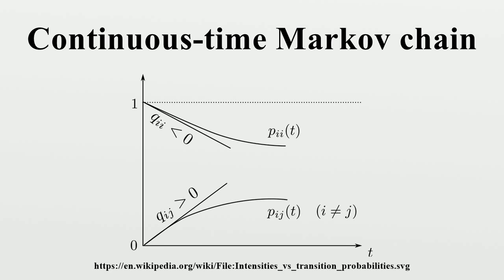Time reversal. For a CTMC X(T), the time-reversed process is defined accordingly. By Kelly's lemma, this process has the same stationary distribution as the forward process. A chain is said to be reversible if the reversed process is the same as the forward process. Kolmogorov's criterion states that the necessary and sufficient condition for a process to be reversible is that the product of transition rates around any closed loop must be the same in both directions.